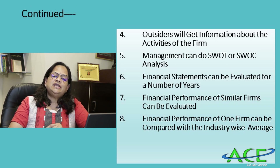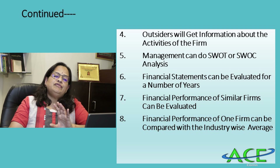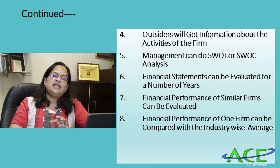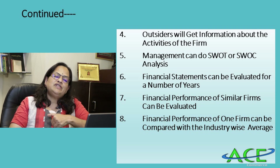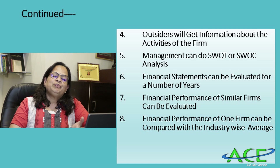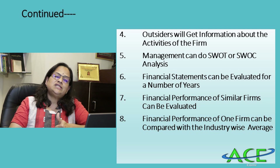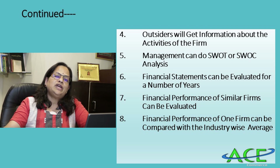Outsiders will get information about the activities of the firm. When outsiders want to buy or sell shares or have business dealings with a firm, they will obtain the basic financial statements — trading, profit and loss account, balance sheet, or cash flow statements. A bank will also check financial statements before granting a loan. Management can also do SWOT analysis — Strengths, Opportunities, Weaknesses, and Threats — using financial statements.